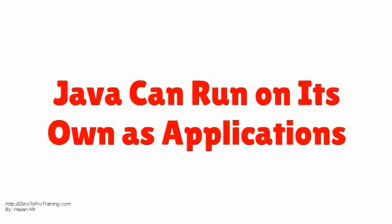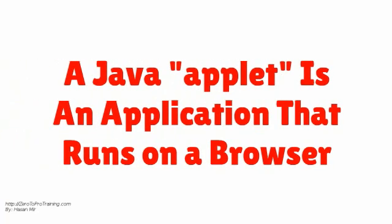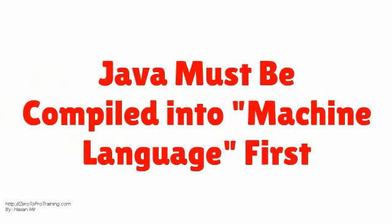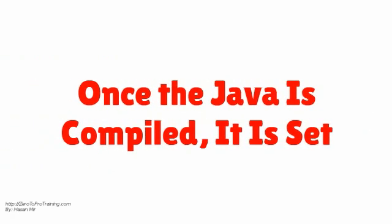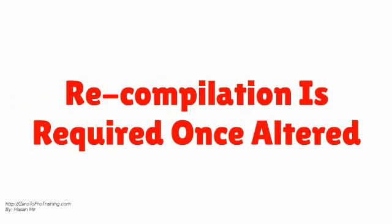Java can run on its own. It creates stand-alone applications or applets. A Java applet is a kind of Java application that could run on a browser. Java must be compiled into what is known as machine language before it can be run as applications or as applets in browsers. Once Java is compiled, it is set. If the Java code is altered again, recompilation will be required.